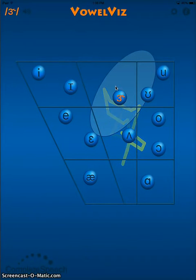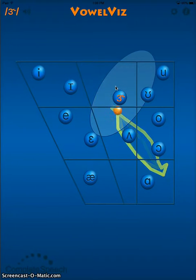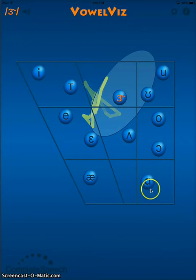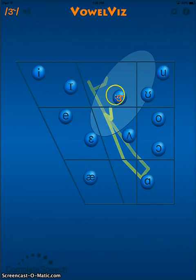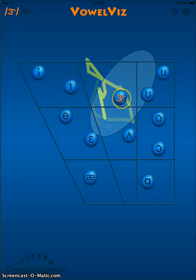Now let's look at vocalic R, as heard in car, far, art, shark. We can see that there's a clear connection between AH and ER, as the tracking ball and the tracking tail goes between those two sounds.